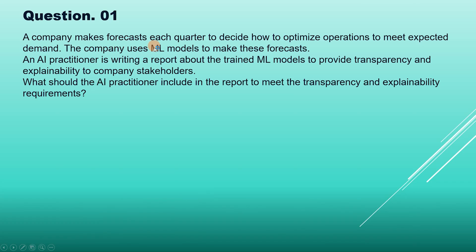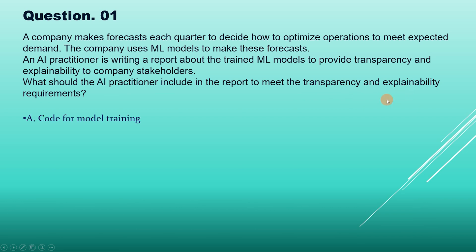Question 1: A company makes forecasts each quarter to decide how to optimize operations to meet expected demand. The company uses ML models to make these forecasts. An AI Practitioner is writing a report about the trained ML models to provide transparency and explainability to company stakeholders. What should the AI Practitioner include in the report to meet the transparency and explainability requirements? The options are: A) code for model training, B) partial dependence plots, C) sample data for training, D) model convergence tables.